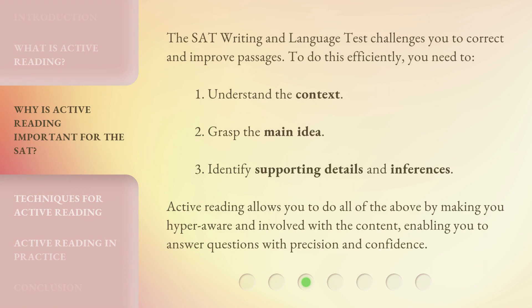The SAT Writing and Language Test challenges you to correct and improve passages. To do this efficiently, you need to: 1. Understand the context. 2. Grasp the main idea. 3. Identify supporting details and inferences. Active reading allows you to do all of the above by making you hyper-aware and involved with the content, enabling you to answer questions with precision and confidence.